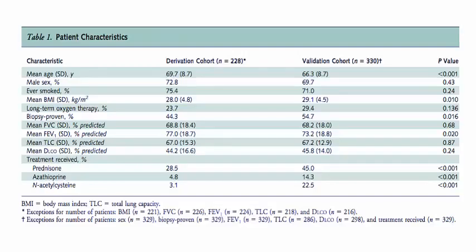Looking at patient characteristics, most patients were male, most had smoked, their BMI was not obese, and a significant number used supplemental oxygen. The FVC was about 68% predicted in both cohorts. Notably, the validation cohort had significantly more patients treated with prednisone than the derivation cohort.